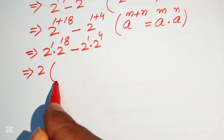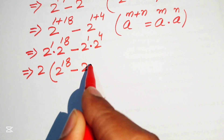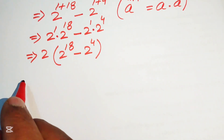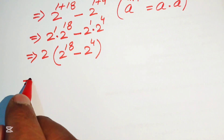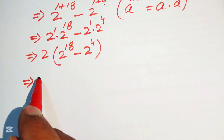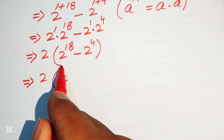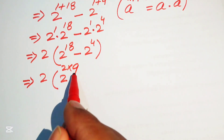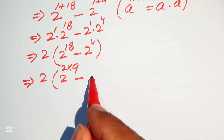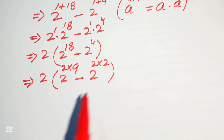Here we see 2 is a common term, so we take out the common factor of 2, leaving 2 to the power of 18 minus 2 to the power of 4. We then focus on the exponents again and rewrite 18 as 2 times 9, and rewrite 2 to the power of 4 as 2 to the power of 2 times 2.